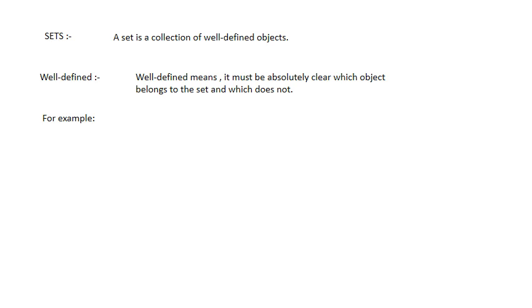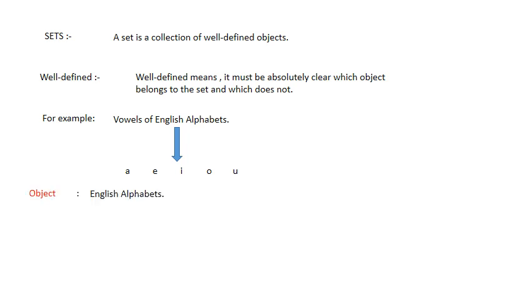Let us take an example: vowels of the English alphabet. You already know what the vowels are - A, E, I, O, U. These are the vowels of the English alphabet. Here the object is the English alphabets.